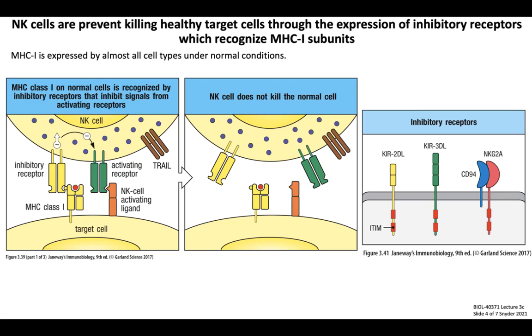In the case of a healthy cell, because MHC class 1 is expressed and binds to inhibitory receptors on the NK cell, this overrides any activation signal, and the end result is that the NK cell leaves the healthy host cell alone, so it survives.